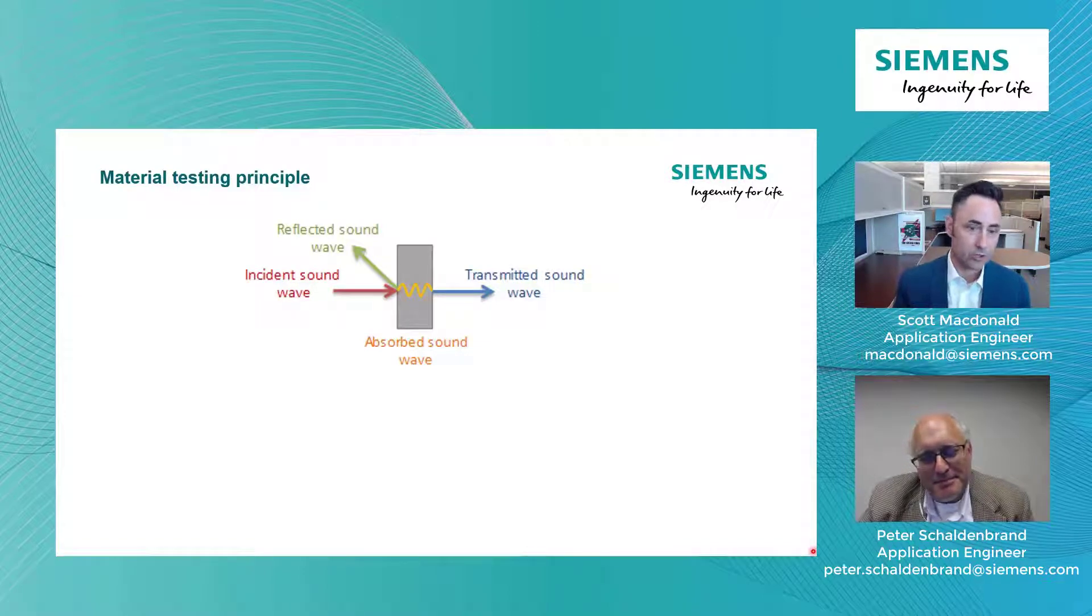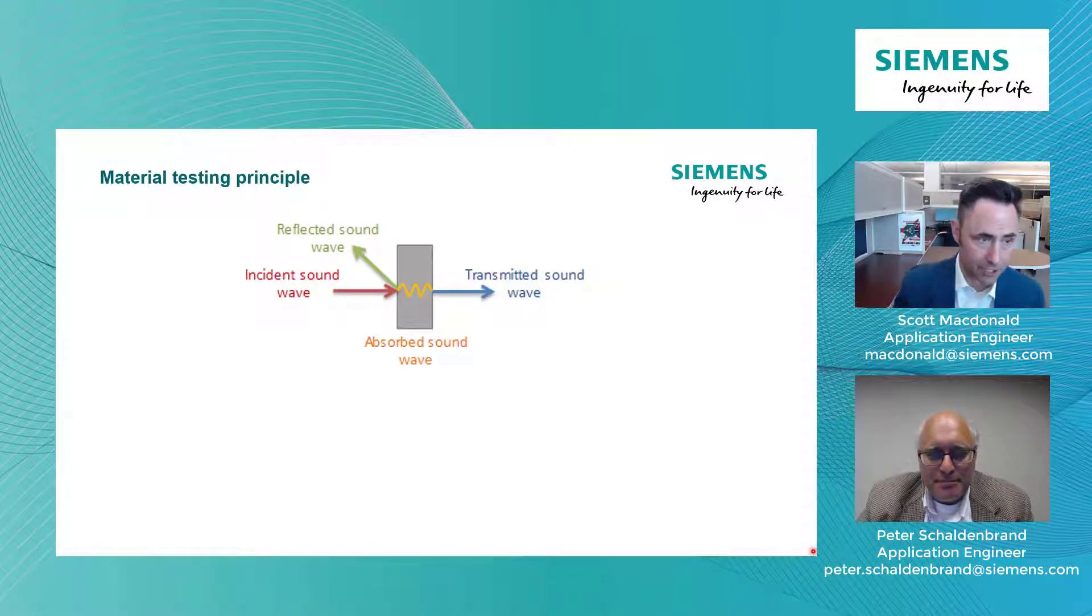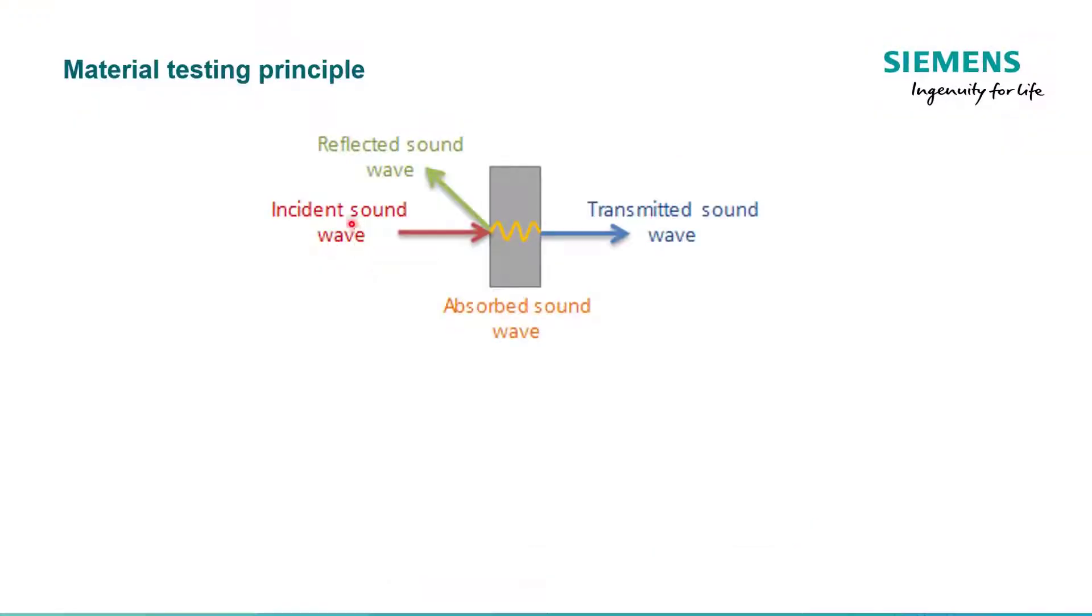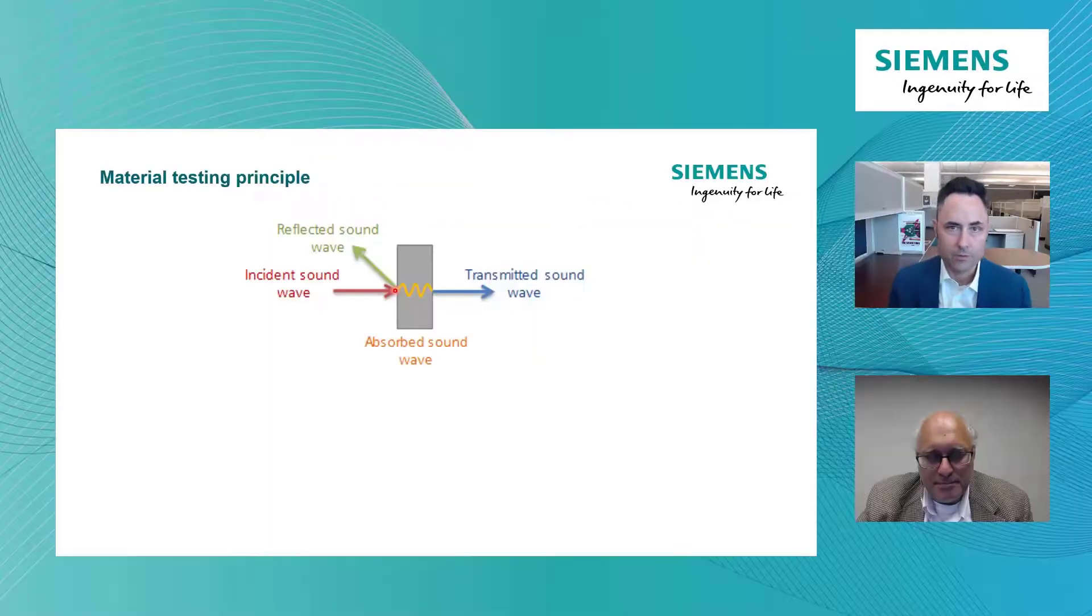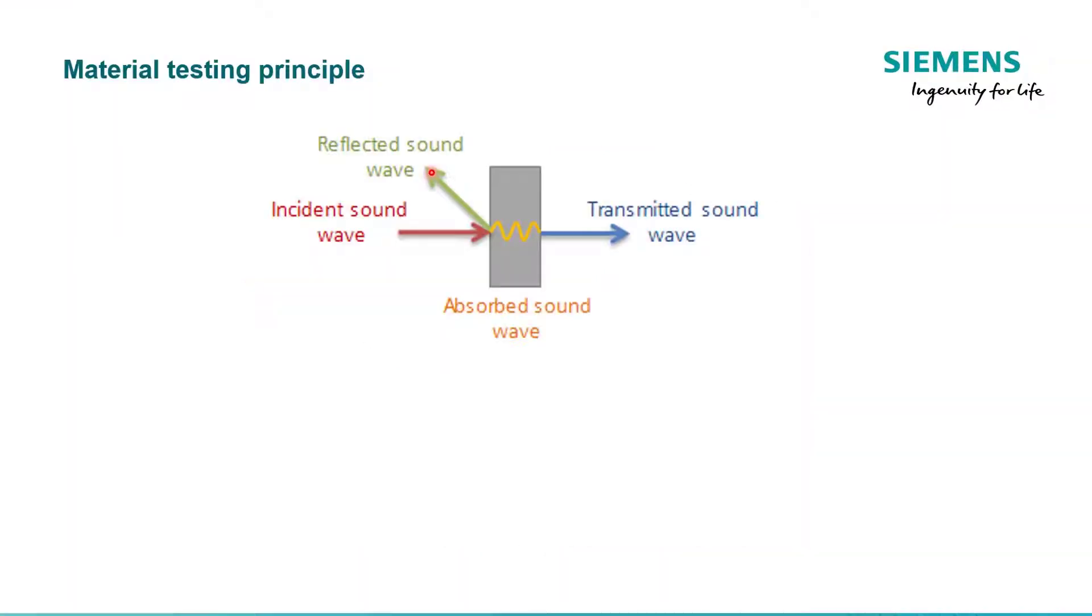So it's important if we're going to control sound to understand how sound behaves when it interacts with another body, some other surface or object. If we think about the incident sound wave energy shown in red here, and it's traveling through the air and it hits something, one of three things is going to happen to that incident energy. Part of it may be reflected and bounce off the object.